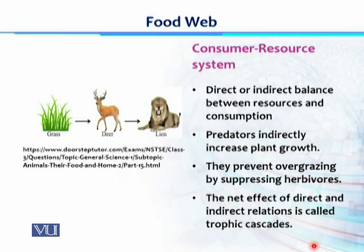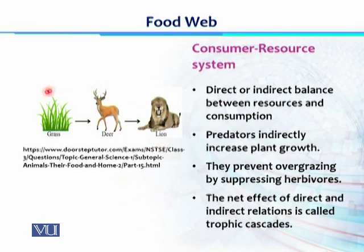That system is called the consumer resource system. This system, directly or indirectly, helps resources and consumption maintain a balance. For example, if we follow this example: grasses are eaten by the primary consumer, which is deer. Deer is eaten by the secondary consumer, which is lion. So actually, lion is indirectly controlling the population size of grasses.